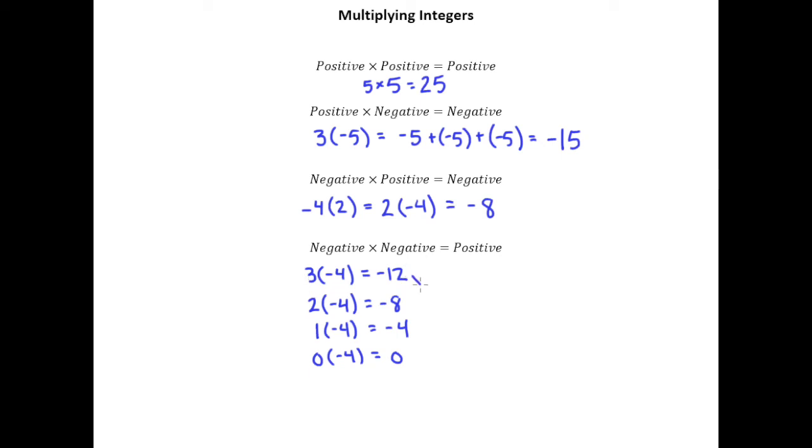Well, going from 3 to 2, we basically just added 4. Going from multiplying by 2 to multiplying by 1, again, we added 4. And to go from here to here, we added 4.